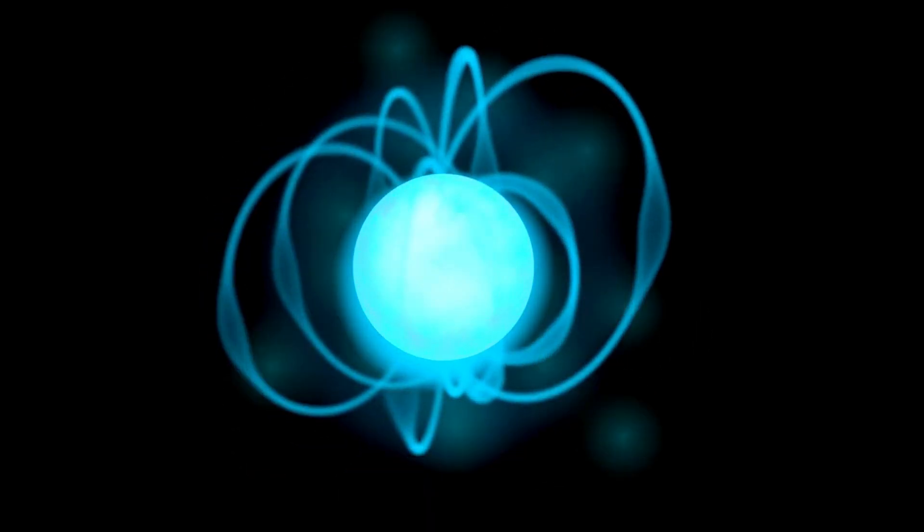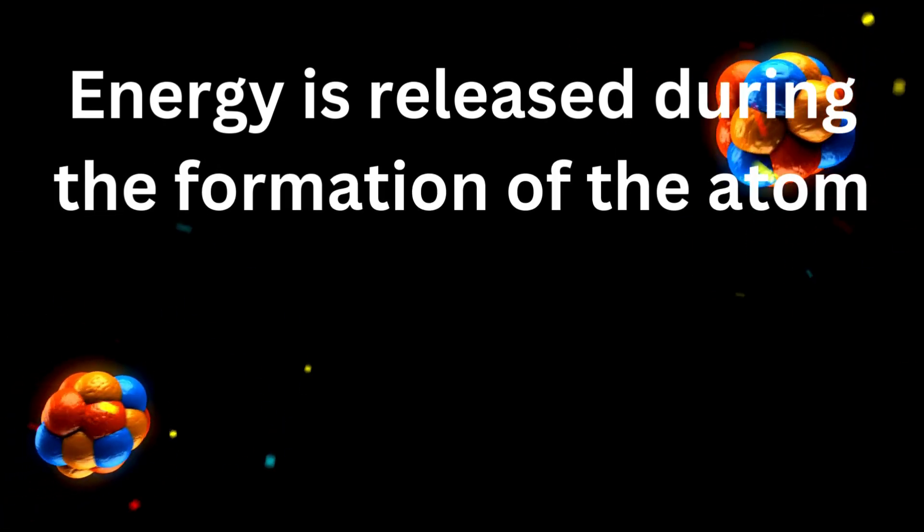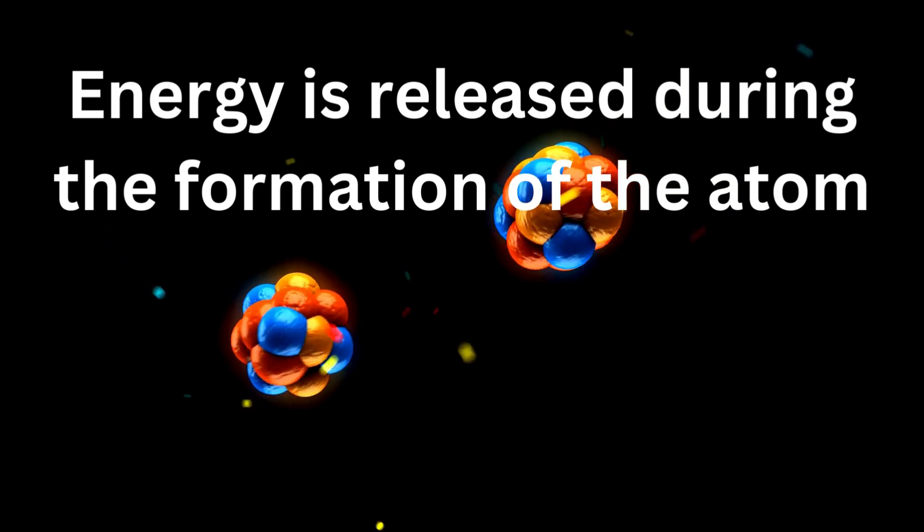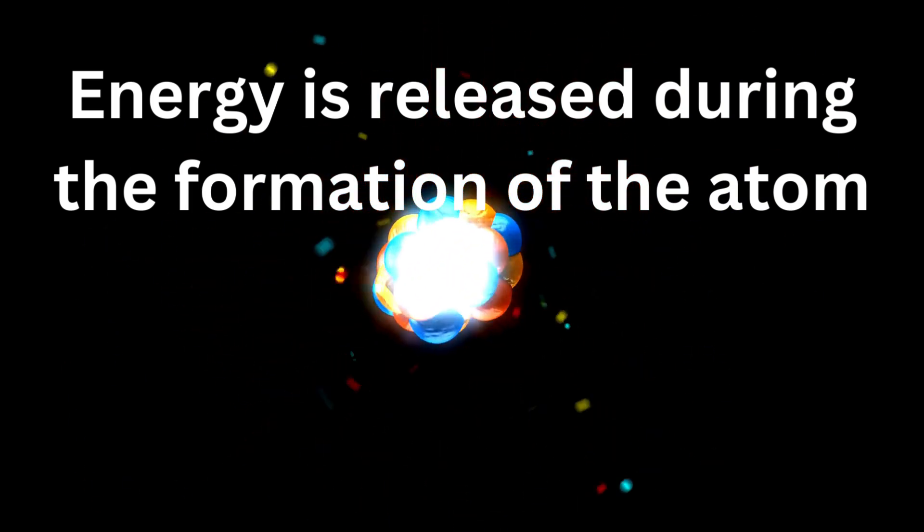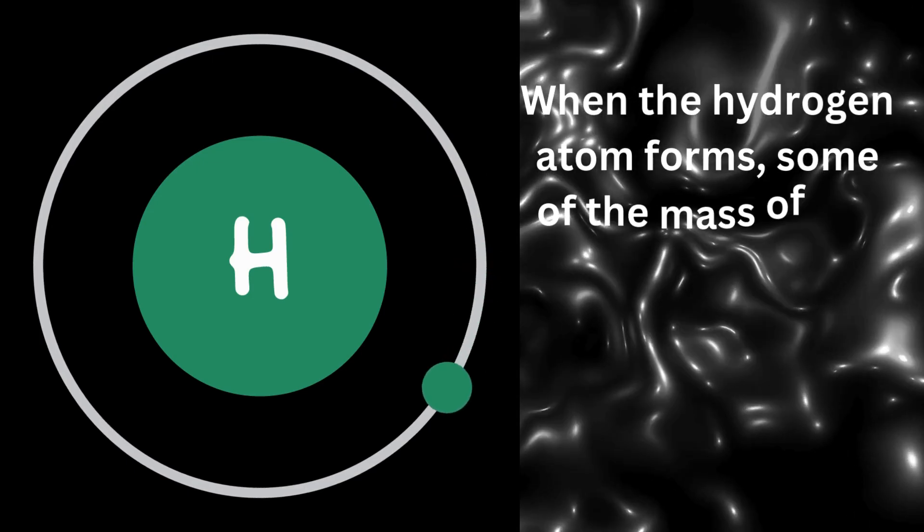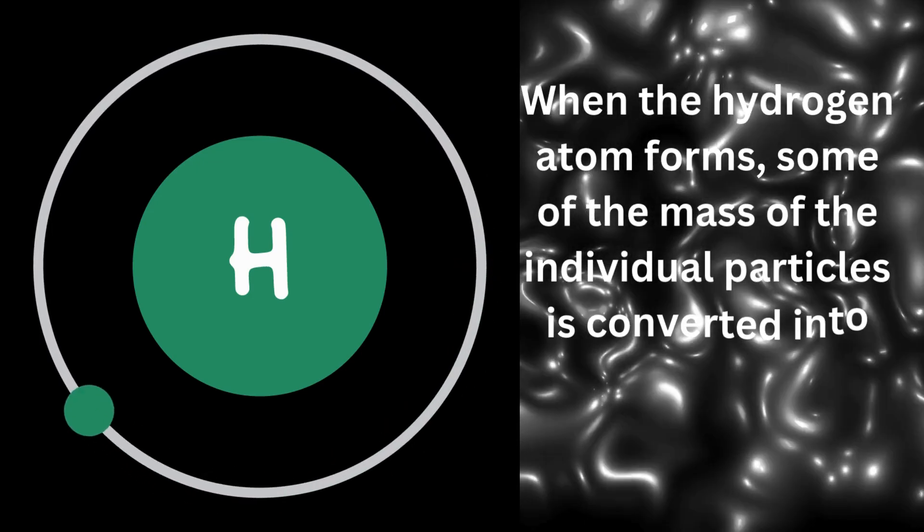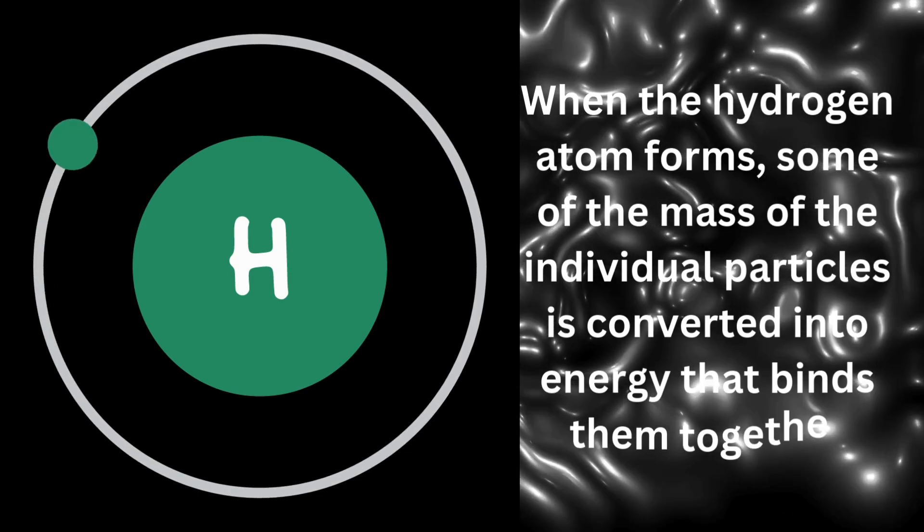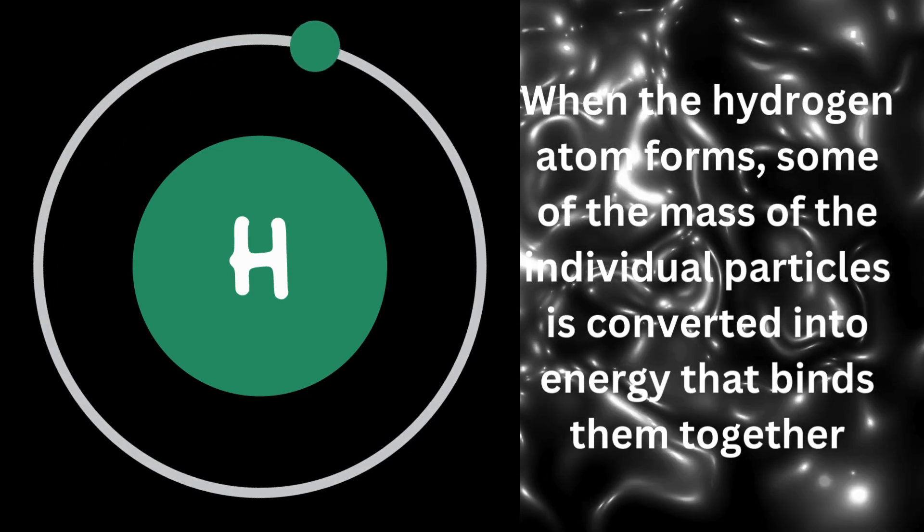It means that energy is released during the formation of the atom. And as we know from Einstein's equation E equals mc squared, energy is equivalent to mass. When the hydrogen atom forms, some of the mass of the individual particles is converted into energy that binds them together. This binding energy is what keeps the atom stable and explains the mass defect we observe.